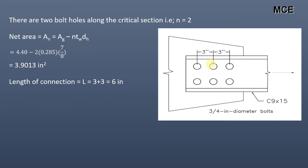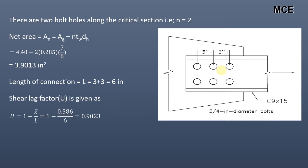The length of the connection is given as 3 plus 3, which equals 6 inches. The shear lag factor U is given by 1 minus x̄ divided by L, which equals 1 minus 0.586 divided by 6, giving U equal to 0.9023. The effective area equals the shear lag factor multiplied by the net area.